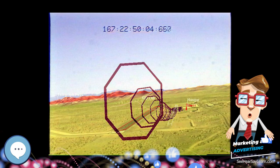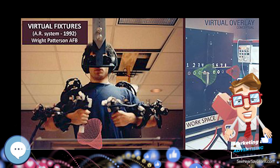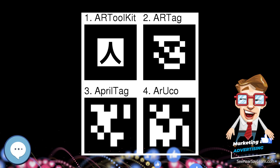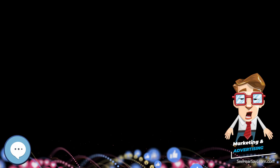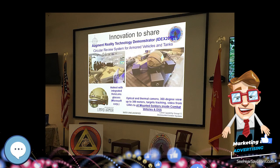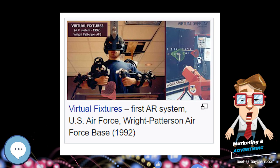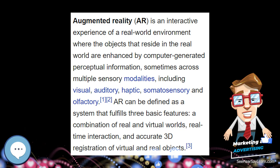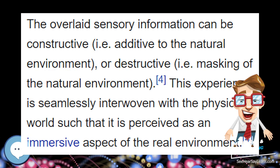Snapchat users have access to augmented reality through camera filters. In September 2017, Snapchat updated its app to include a camera filter that allowed users to render an animated cartoon version of themselves called Bitmoji, which can be photographed or video recorded. Snapchat also announced a new feature called Sky Filters that uses augmented reality to alter the look of a picture taken of the sky. Users can choose from sky filters such as starry night, stormy clouds, beautiful sunsets, and rainbow.